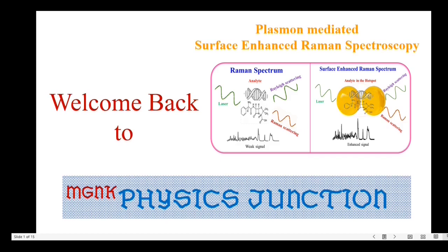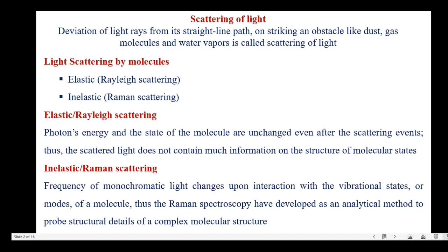Let's have a brief discussion on scattering of light. On striking an obstacle like dust, gas molecules, or water vapor, the path of the light rays gets deviated. This deviation of light rays from its straight line path is called the scattering of light. Light scattering by molecules is either elastic scattering or inelastic scattering. Elastic scattering is known as Rayleigh scattering and inelastic scattering is known as Raman scattering.